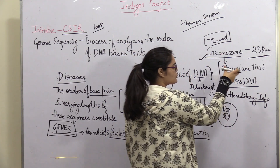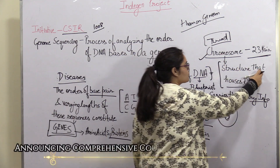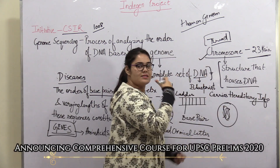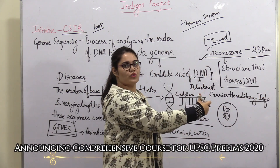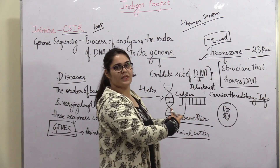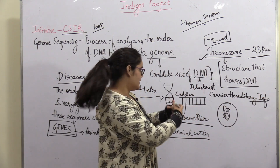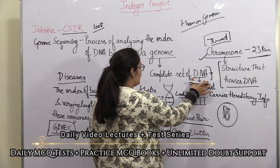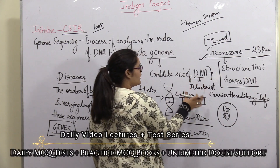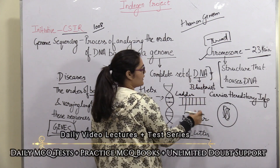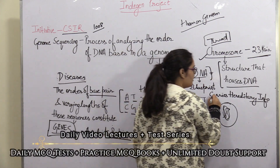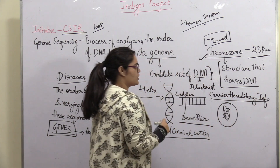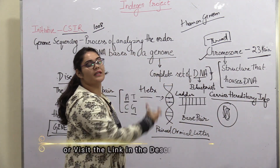Chromosomes are the structure that houses the DNA. So: in a cell, you have chromosomes, and chromosomes contain DNA. What is DNA? DNA is our body's blueprint. It carries your hereditary information.